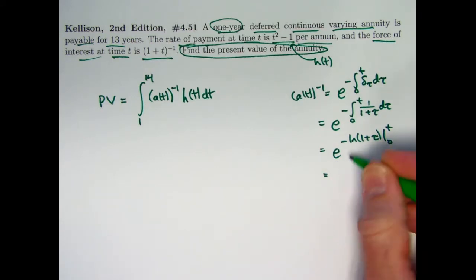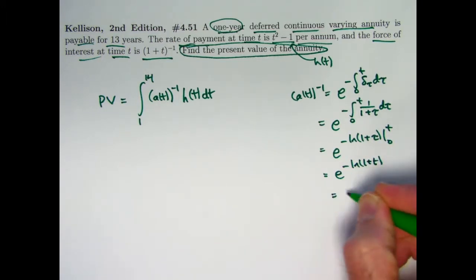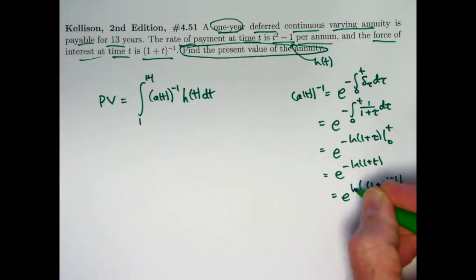This will give an e to the negative natural log of 1 plus t. You can bring the negative sign up into the power and get e to the natural log of 1 plus t to the negative 1 power. This is a natural log here. And use the fact that they're inverse functions to simplify it to 1 plus t to the negative 1.